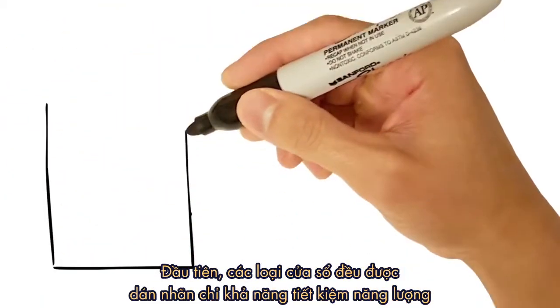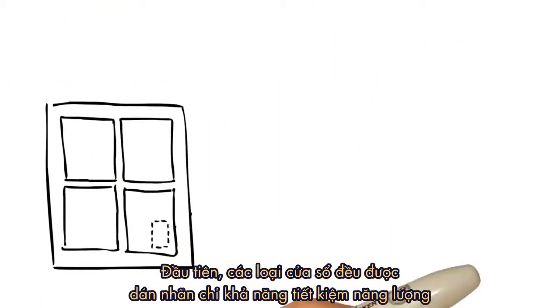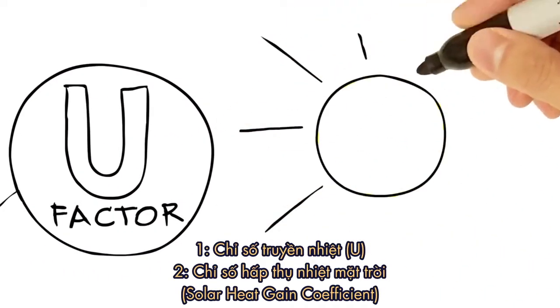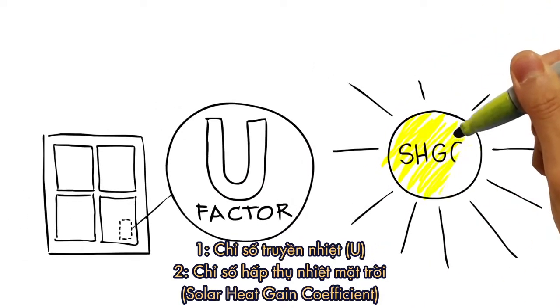First, you should know that every window has a label that summarizes its overall energy performance. It shows two primary ratings: U-factor and solar heat gain coefficient.